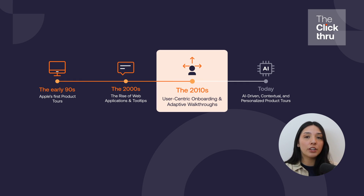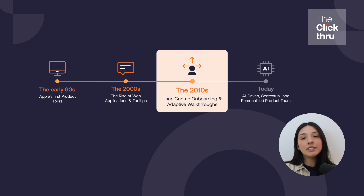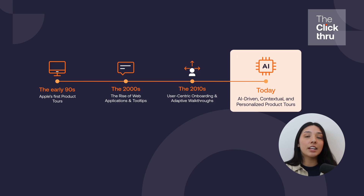By the 2010s, companies started recognizing that traditional product tours weren't enough. Long, mandatory walkthroughs often led to drop-off rather than engagement. That's when progressive onboarding emerged, where users were introduced to features gradually based on their interactions and needs.